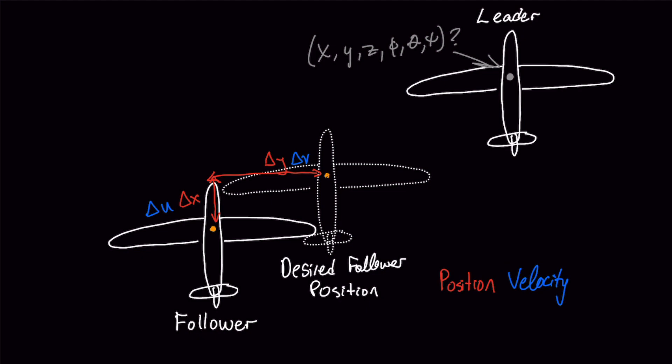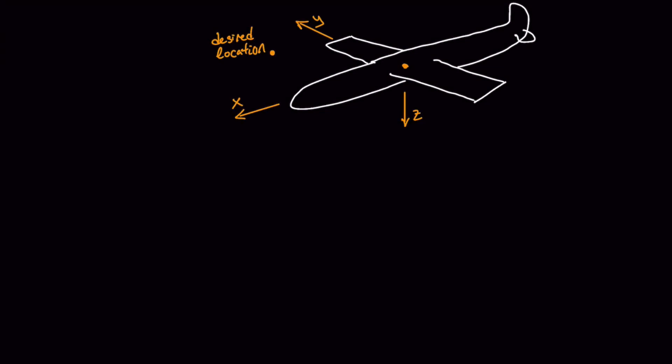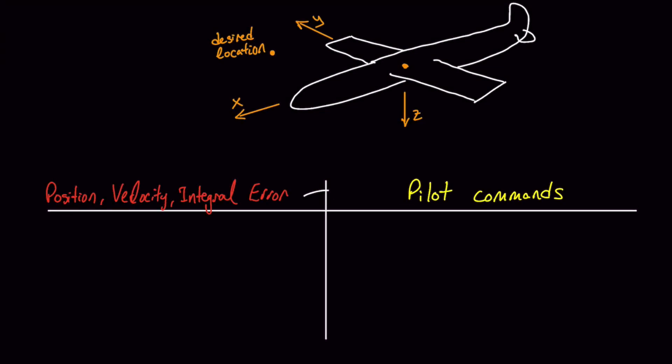Strictly speaking, the follower's required velocity is a bit different because of its offset, but for the wide turns we care about, that difference should be negligible. Finally, to correct long-term drift, we include the accumulated position error. Each of these terms — position, velocity, and integral error — is scaled by its own set of gains: P, D, and I. By combining these terms, the PID controller outputs a vector that we use to drive the pilot commands.